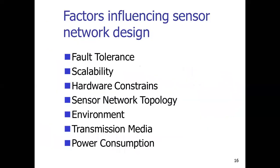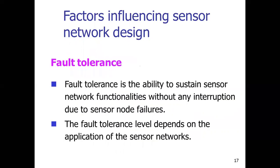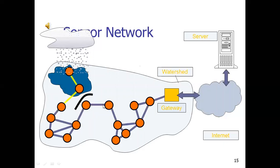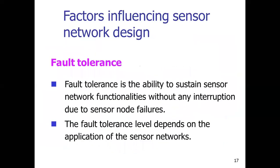Now we'll see the factors influencing sensor network design — what we need to consider before deploying any wireless sensor network. The first factor is fault tolerance: the ability to sustain sensor network functionality without any interruption due to sensor node failure. If any node fails, the network will automatically find the next shortest alternate path. That is the fault tolerance capability of a sensor network.